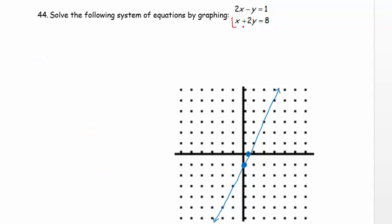Now we will graph this line. For the x-intercept, we set y equals 0. We have x plus 2 times 0 equals 8. That gives us x equals 8. And so the x-intercept is 8, 0.